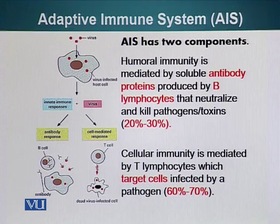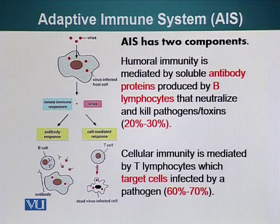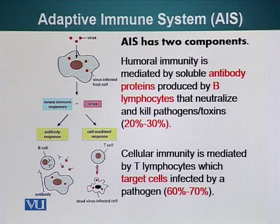So when antibodies bind pathogens, they can inactivate them or they can recruit other cells, which will help destroy the offending agent. Cellular immunity is mediated by T cells, which target cells that have been infected by pathogens.